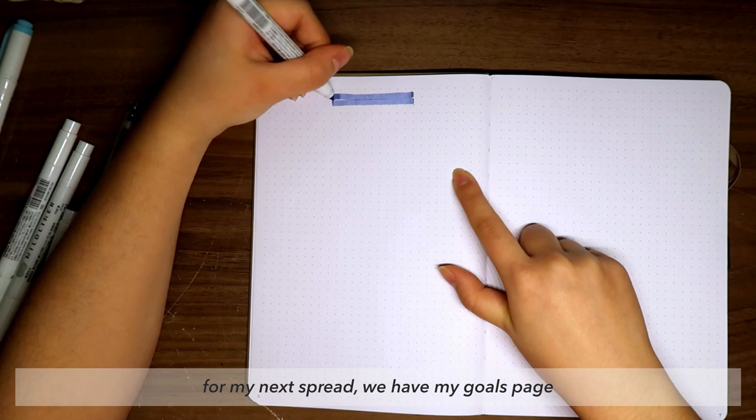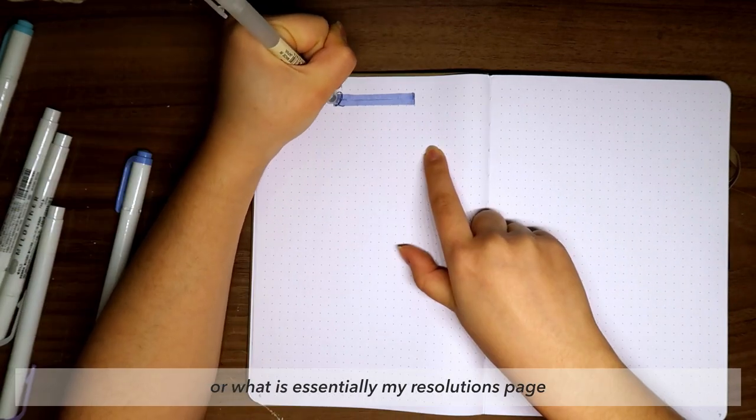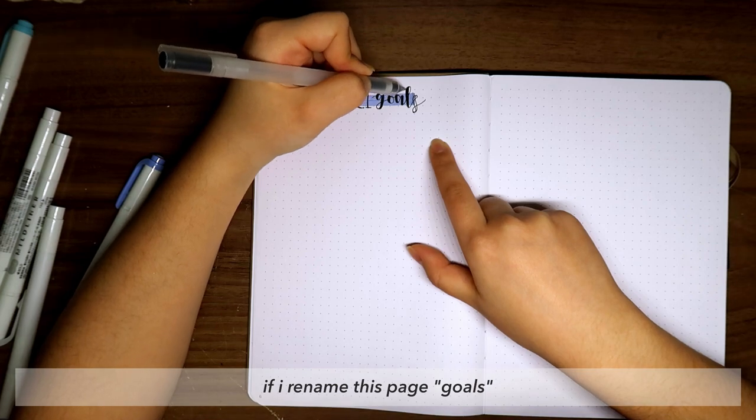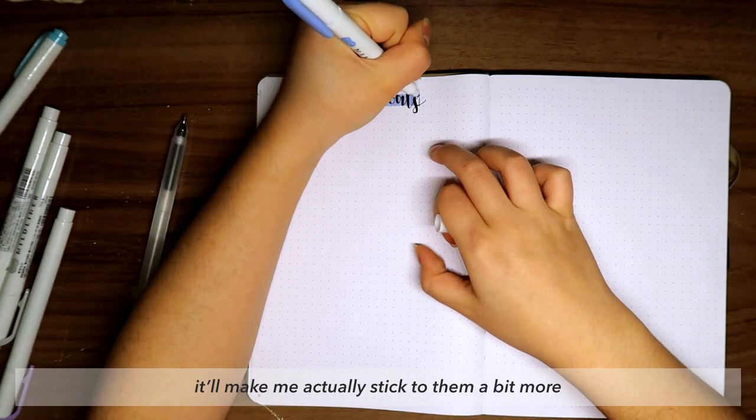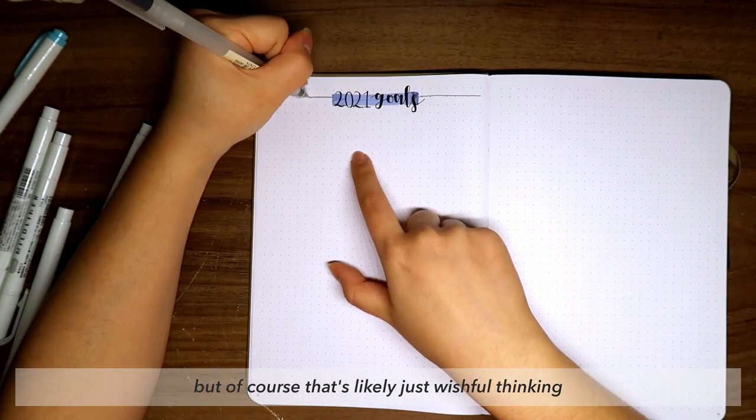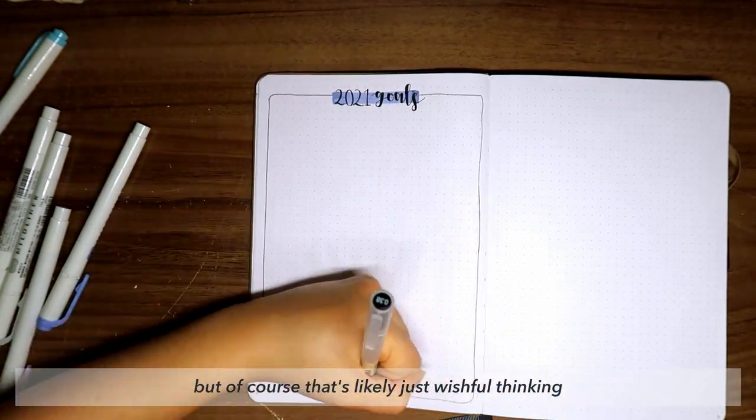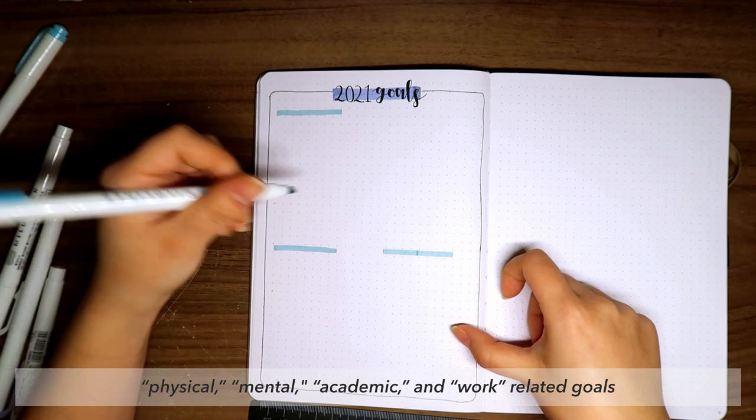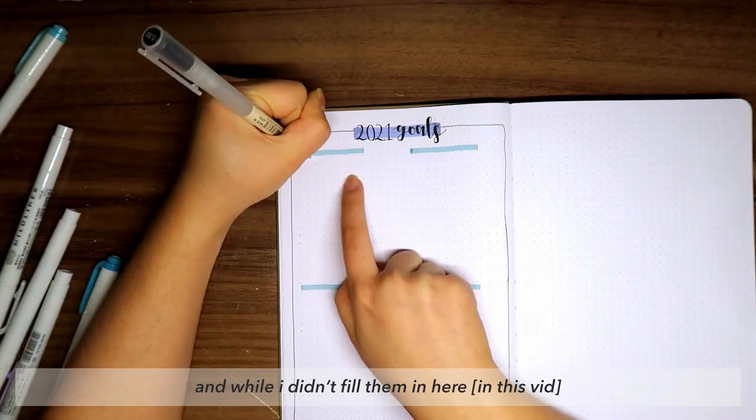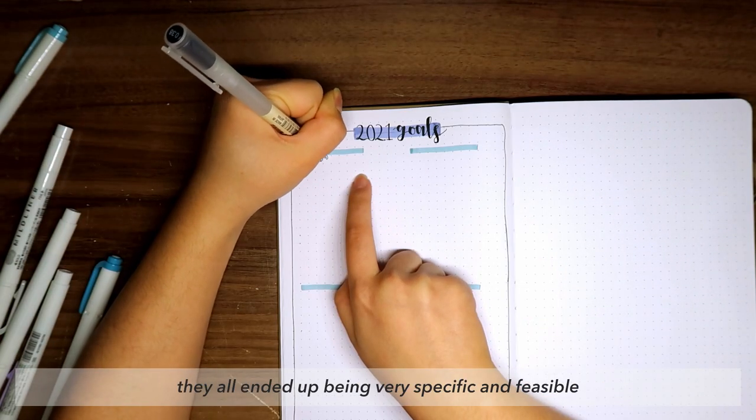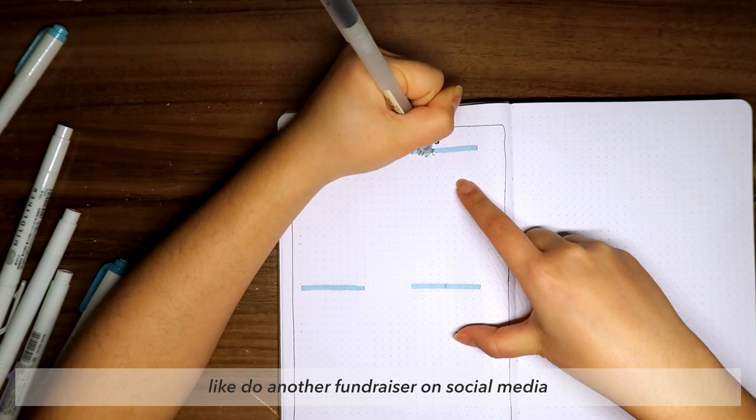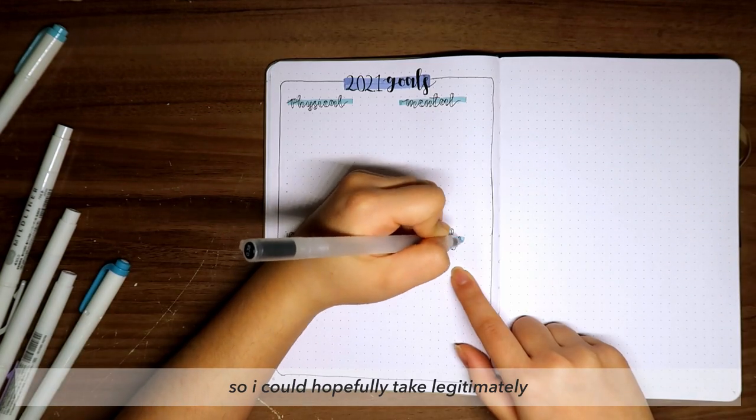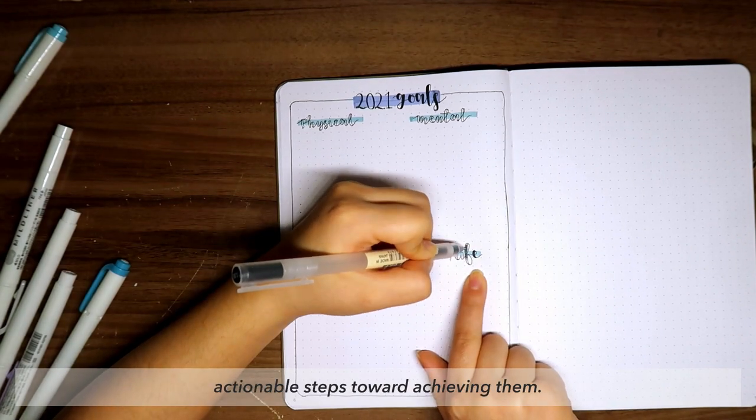For my next spread, we have my goals page, or what is essentially my resolutions page. I don't laugh, but I'm hoping that if I rename this page 'goals' instead of 'resolutions,' it'll make me actually stick to them a bit more. But of course, that's likely just wishful thinking. I divided it up into four categories: physical, mental, academic, and work-related goals. While I didn't fill them in here, they all ended up being very specific and feasible, like 'do another fundraiser on social media' or 'journal three times a week,' so I could hopefully take legitimately actionable steps towards achieving them.